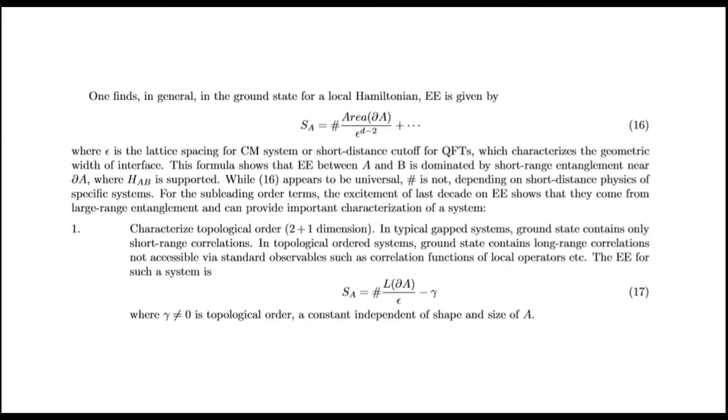Calculate topological order in 2 plus 1 dimensions. In typical gapped systems, ground state contains only short-range correlations. In topological order systems, ground state contains long-range correlations not accessible via standard observables such as correlation functions of local operators. The entanglement entropy for such a system is this, where γ not equal to zero is topological order.